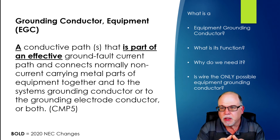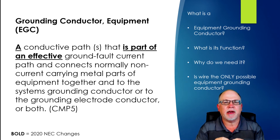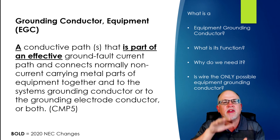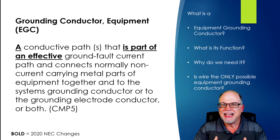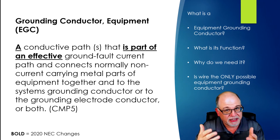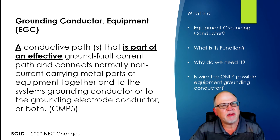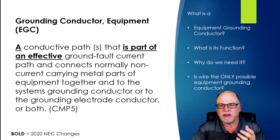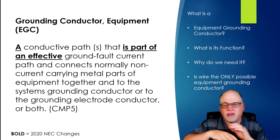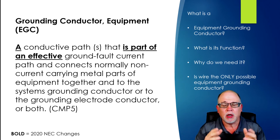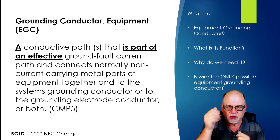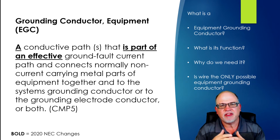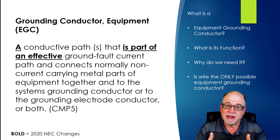Does it have to be the wire-only type? Absolutely not, but you have all these weak links when it comes to raceways — couplings, fittings, connections, lock nuts. You have all these things that could go wrong. When you run a wire, you have two points: the point where you start it and the point where it ends at the equipment. So there's less chance of something going wrong. But under 250.118, there's an entire list of different types of equipment grounded conductors you can use.